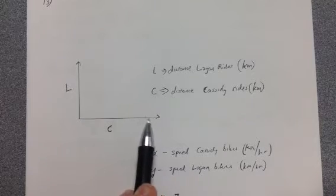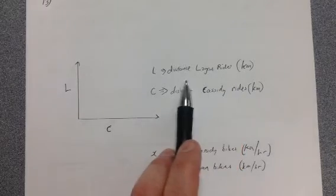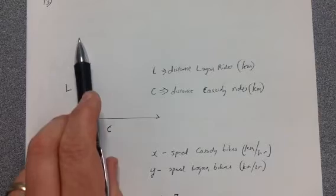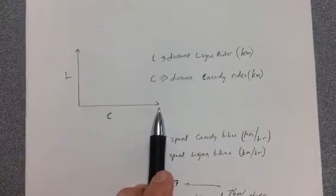And what I know right now I'm just jotting down a few ideas. I think L represents the distance that Logan's going to ride, so clearly it's going to change because time passes and he's moving away. And same thing true for Cassidy. So that's her distance, C.